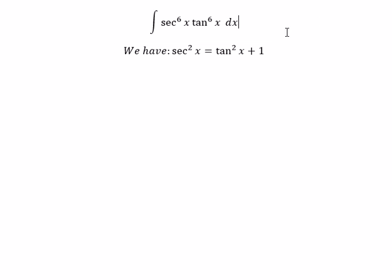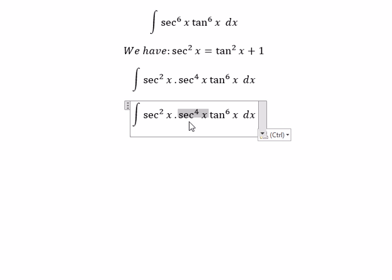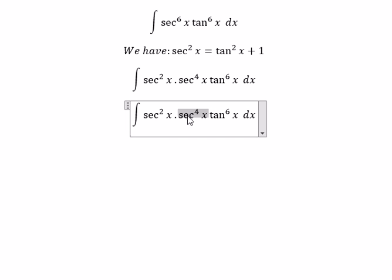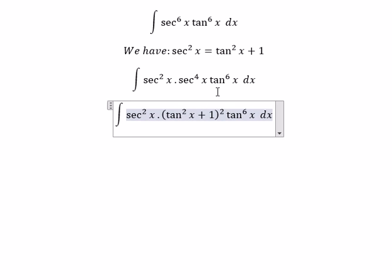So in here we got about sec⁶x. We can put about sec²x multiply with sec⁴x. Next we need to change for this one. So you got about (tan²x + 1)² because this is about power 4, this is about power 2, so that's why you got the power 2 in here.